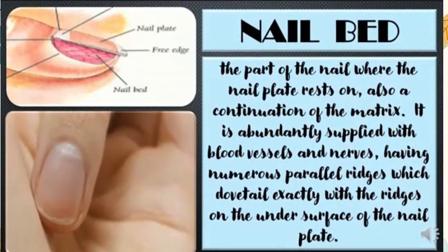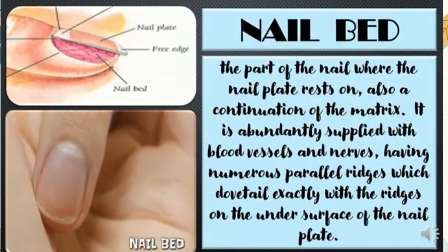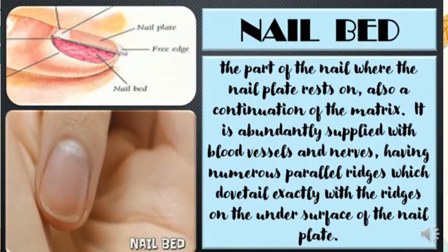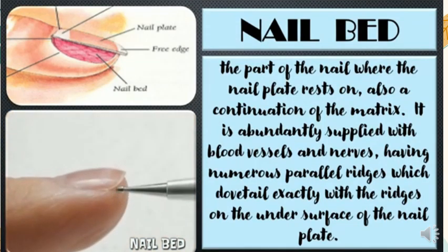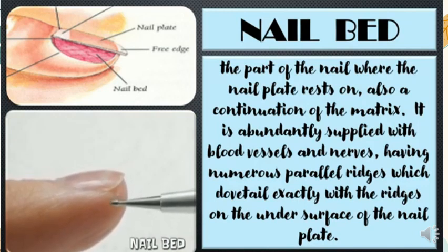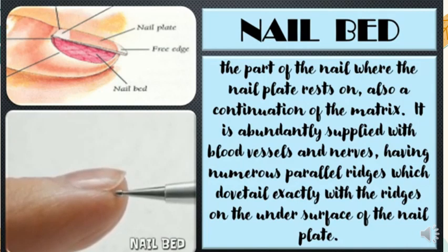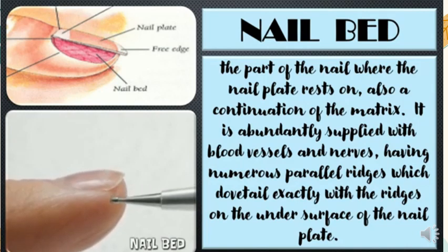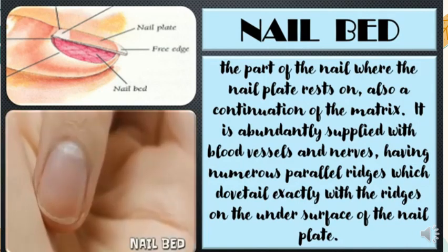Nail bed — the part of the nail where the nail plate rests. Also a continuation of the matrix. It is abundantly supplied with blood vessels and nerves, having numerous parallel ridges which dovetail exactly with the ridges on the undersurface of the nail plate.